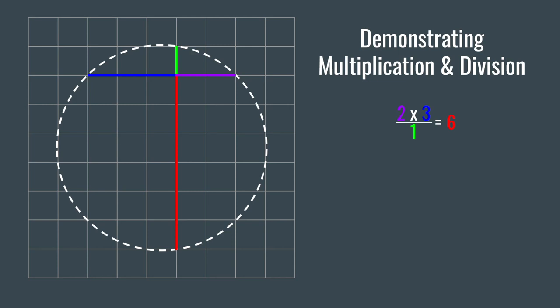2 times 3, 2 being, of course, the length of the magenta line segment, times 3, the length of the blue line segment, over 1, the length of the green line segment, is equal to 6, the length of the red line segment. This applies for all line segments.